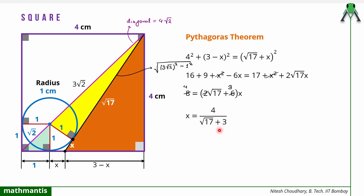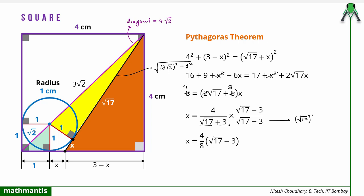Now I will rationalize the denominator to remove the square root term. I multiply numerator and denominator by the conjugate (√17 − 3). In the numerator it becomes 4(√17 − 3). For the denominator, using the identity (a + b)(a − b) = a² − b², it becomes 17 − 9 = 8. So 4 cancels with 8 to give 2, and the value of x is (√17 − 3)/2.